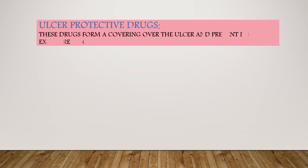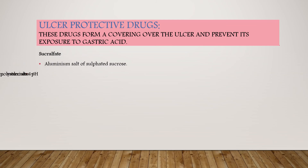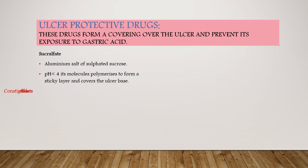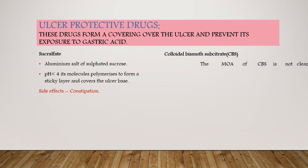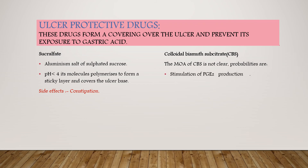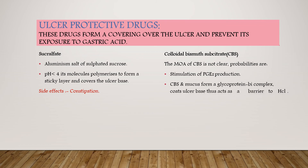Ulcer protective drugs form a covering over the ulcer and prevent its exposure to gastric acid. The first drug is sucralfate, which is an aluminum salt of sulfated sucrose. At a pH less than 4, its molecules polymerize to form a sticky layer that covers the ulcer base, preventing exposure to gastric acid. The side effect of sucralfate is constipation.